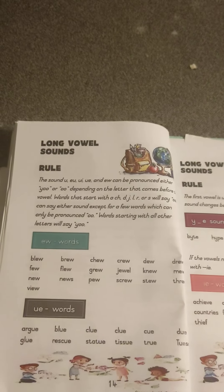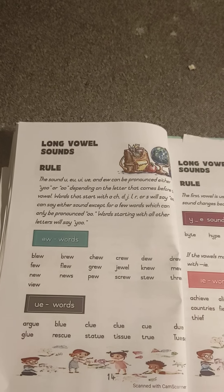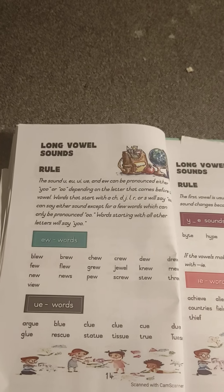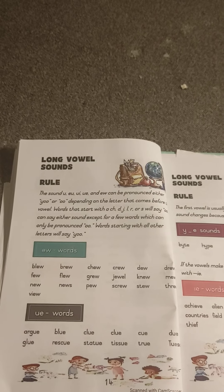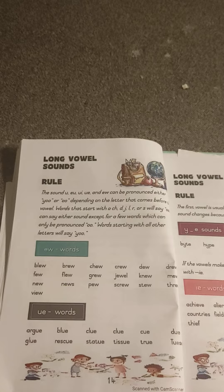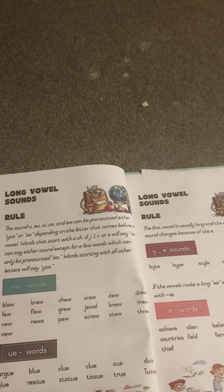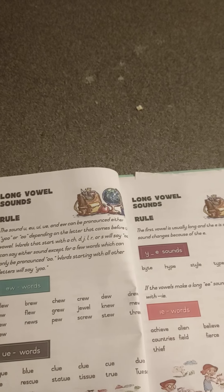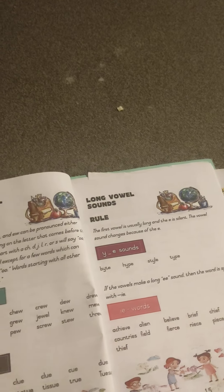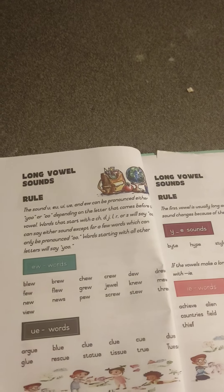The sounds EU, UI, UE, and EW can be pronounced either as OO or YOO depending on the letter that comes before the vowel. Words that start with A, H, D, J, L, R, or S will say OO. Some words can only be pronounced OO.